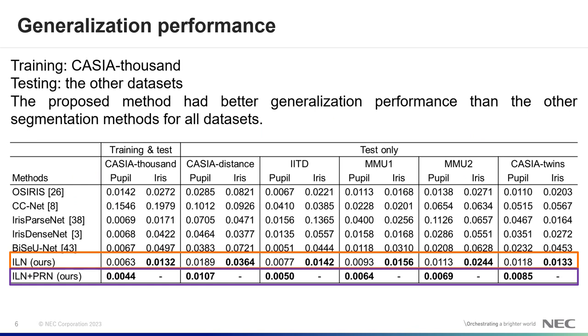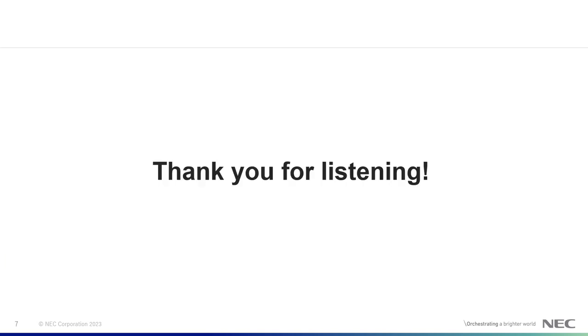Finally, we show the generalization performance of the proposed method. The performance of CNN based methods tends to depend on the training dataset domain and its generalization performance to other domains is not guaranteed. So we evaluated the model trained by a single dataset using other datasets which were not included in training. Evaluation results show that the proposed model had better generalization performance than the other segmentation methods for all datasets. That's all. Thank you for listening.